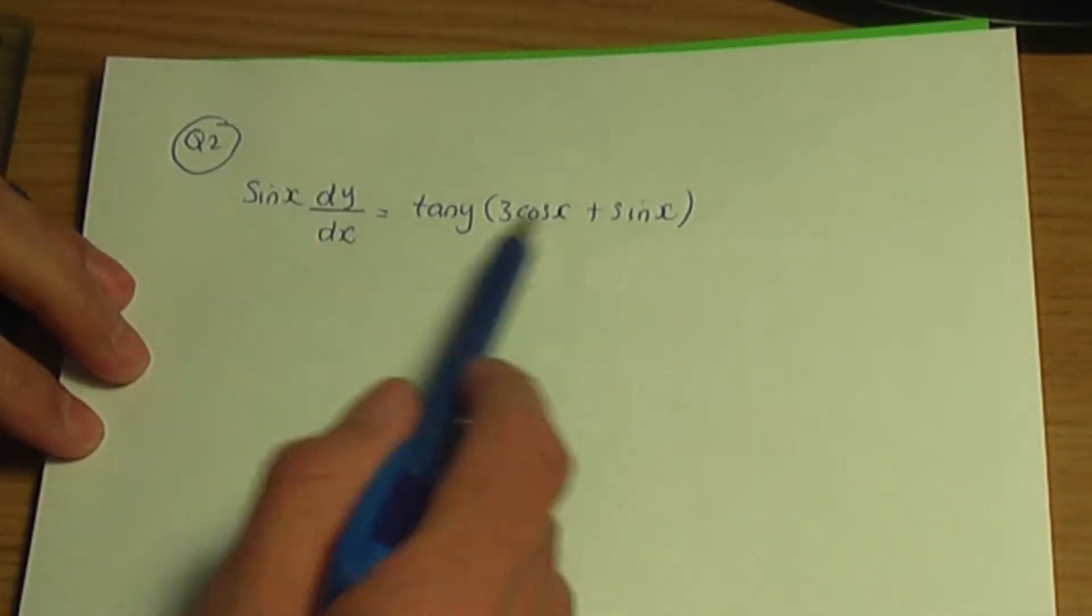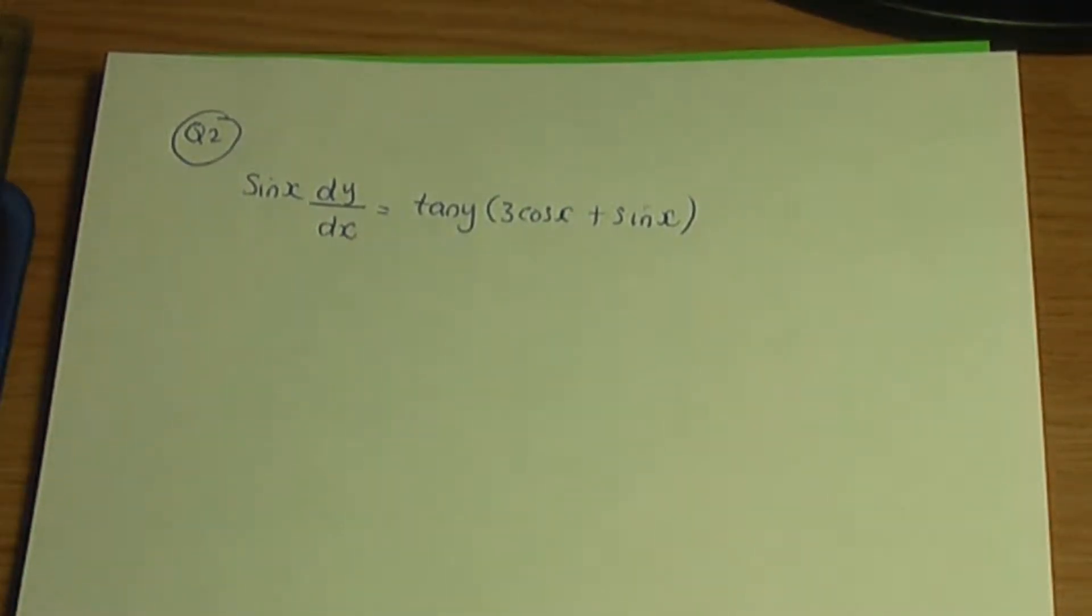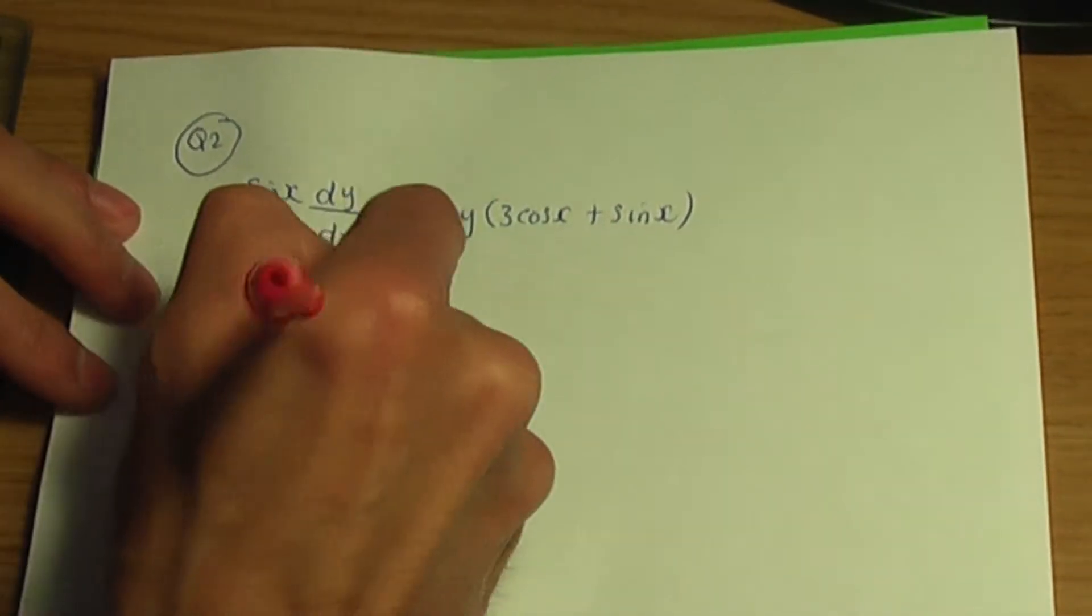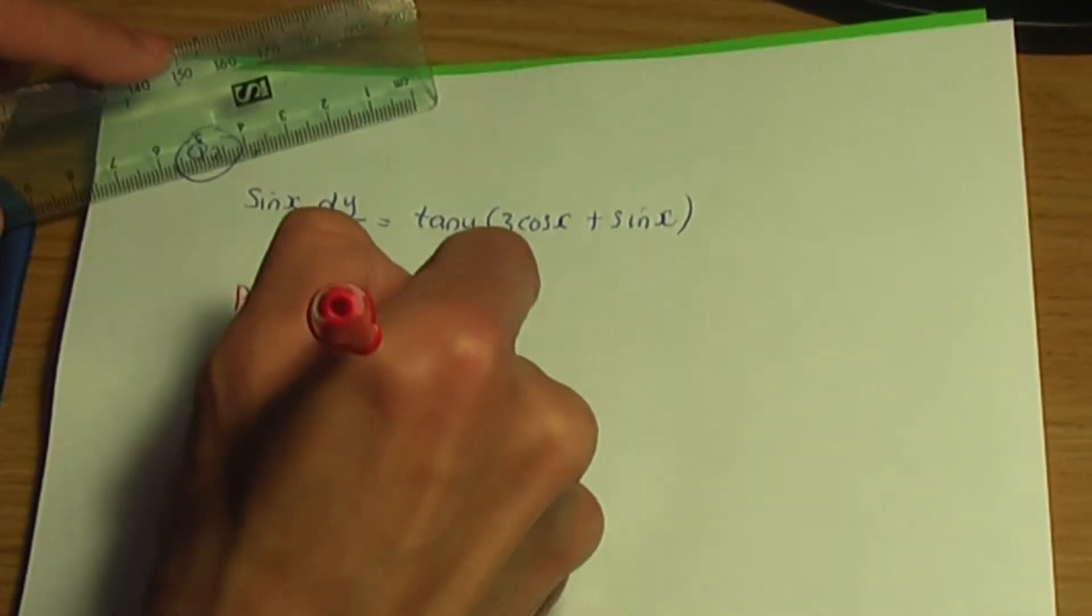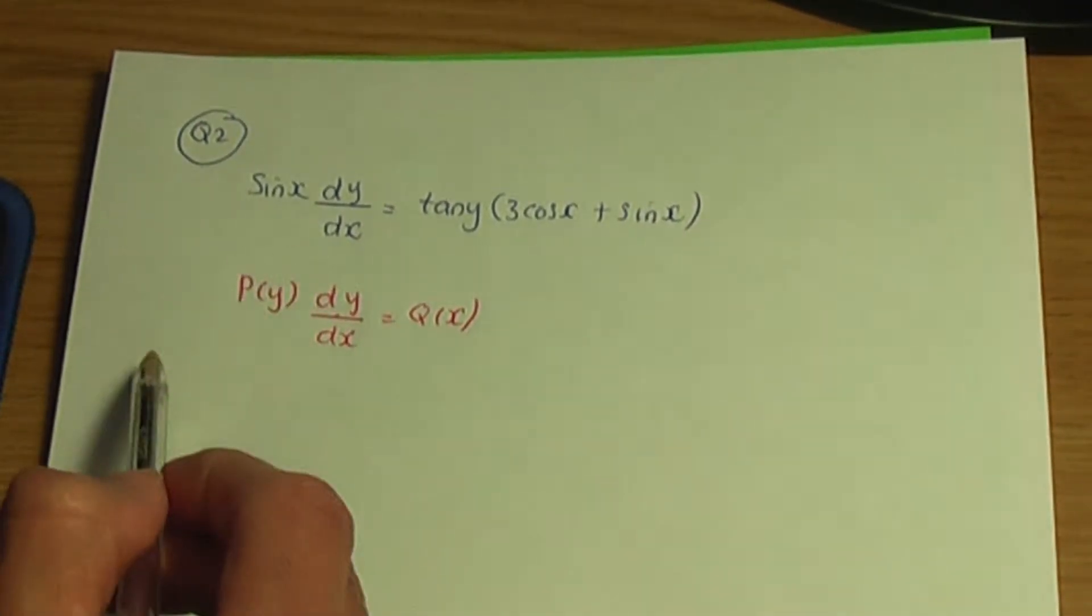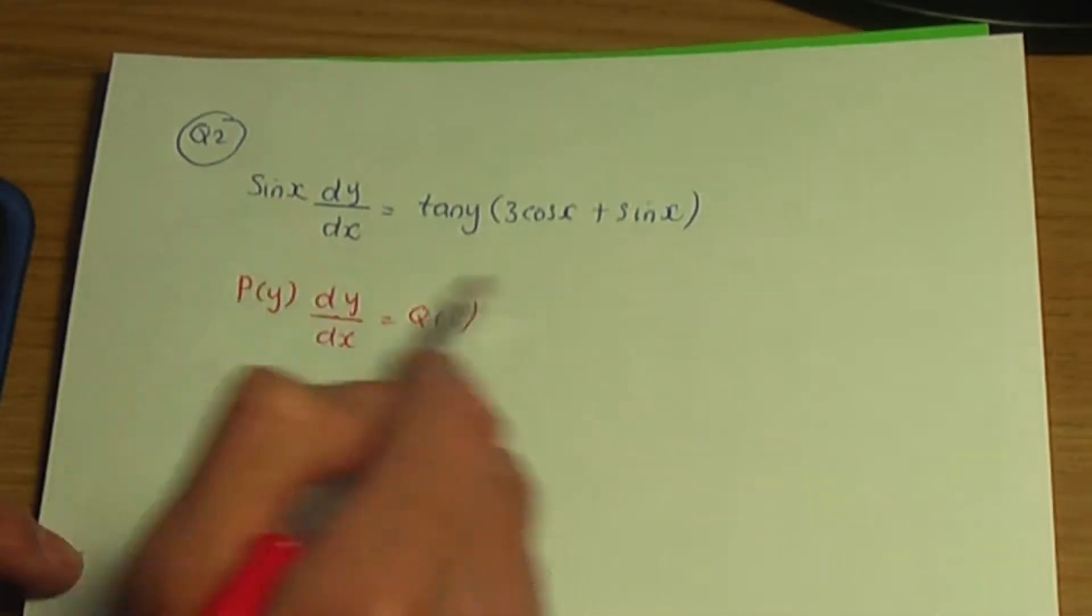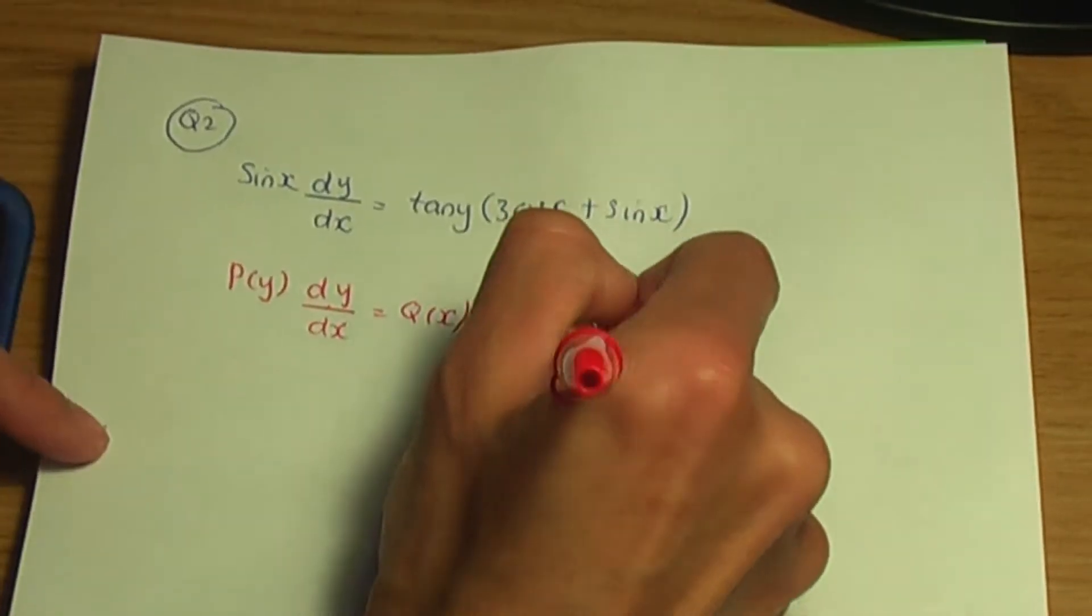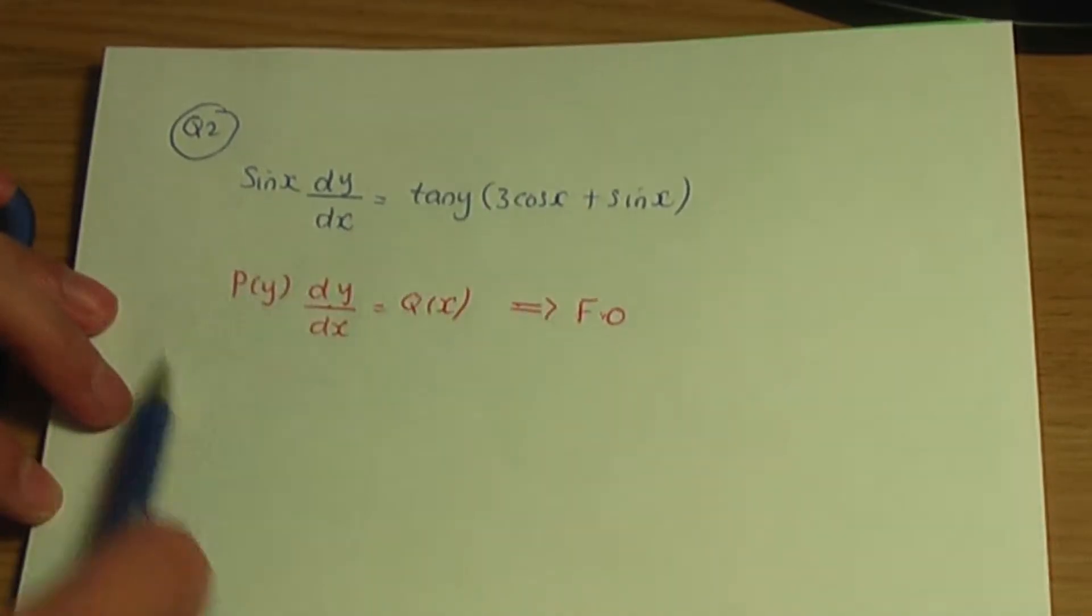Now, first of all, let's see whether this differential equation given is first order. So just as a reminder, if it is possible to rearrange of the form p(y) dy over dx is equal to q(x), where p(y) is a function of y and q(x) is a function of x. So if it's possible to rearrange this given equation in this form, that would make this equation first order. So let's see whether we can rearrange it in this form.